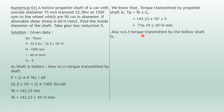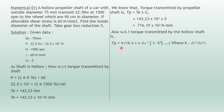The torque transmitted by a hollow shaft is given by: Tp = (π/16) × τ × D_o³ × (1 − K⁴), where K is the ratio of inside diameter to outside diameter, and the whole bracket is raised to the 4th power.